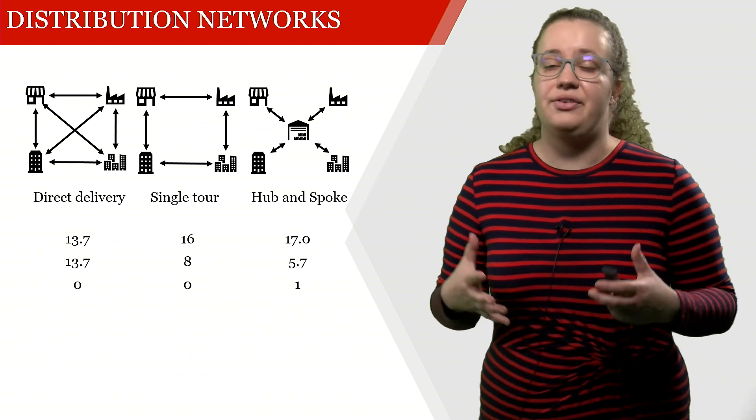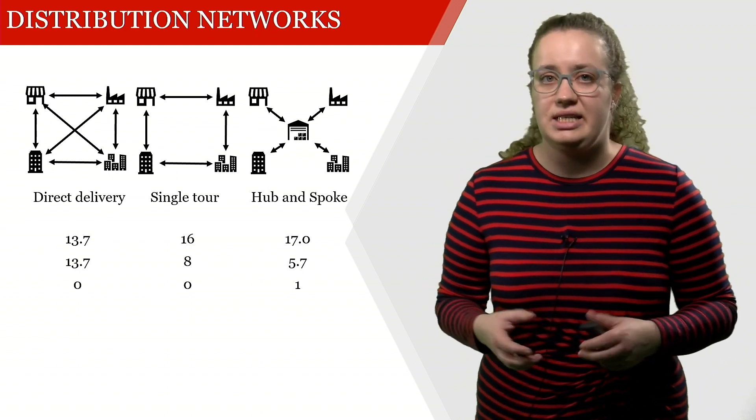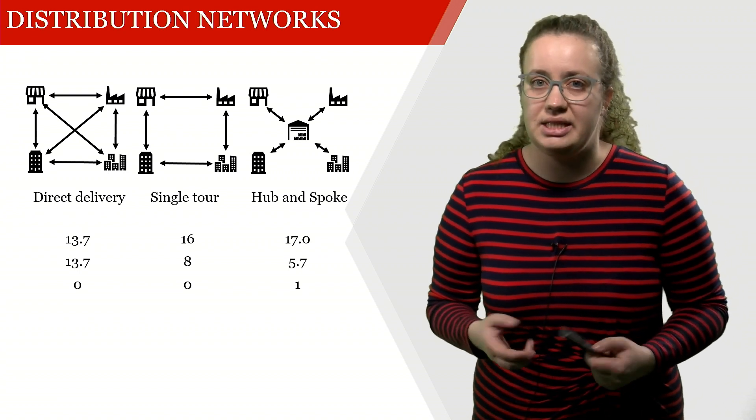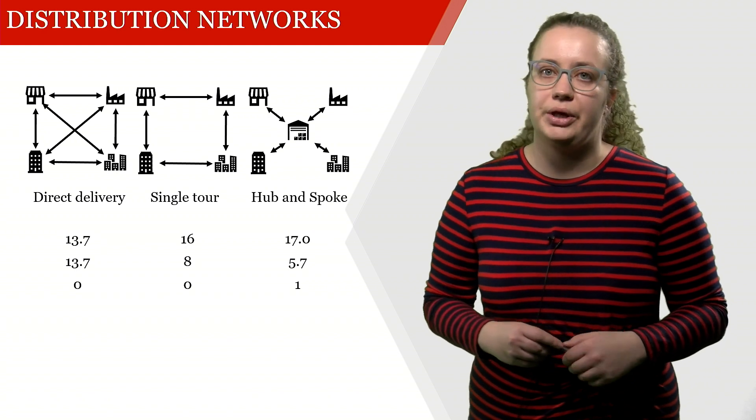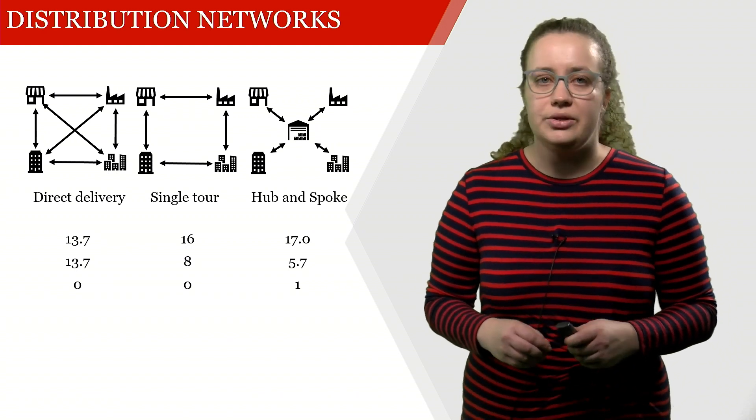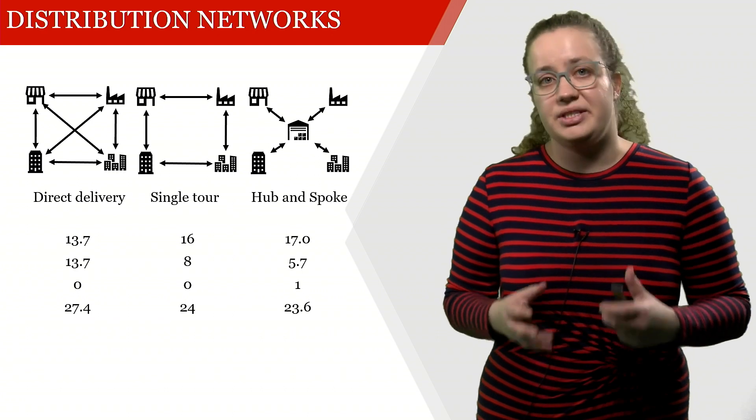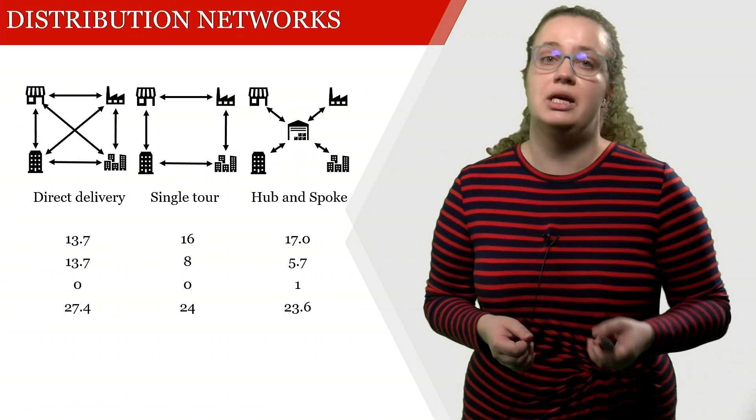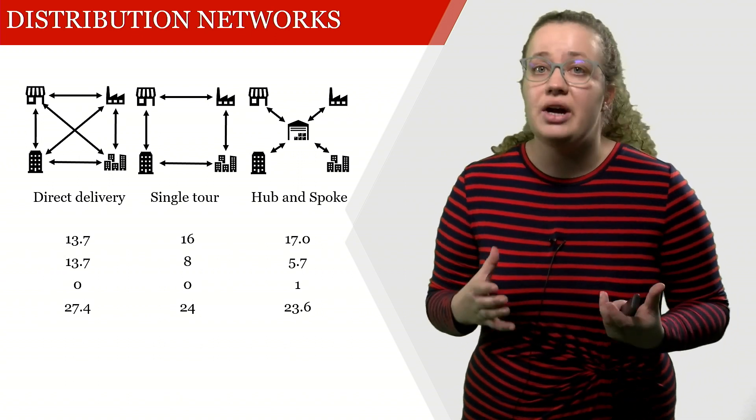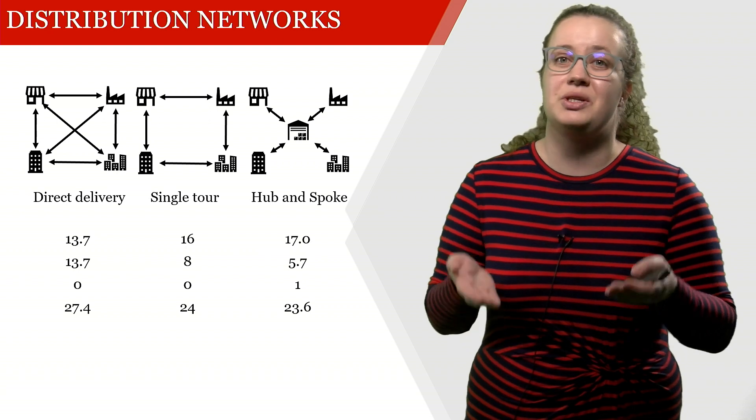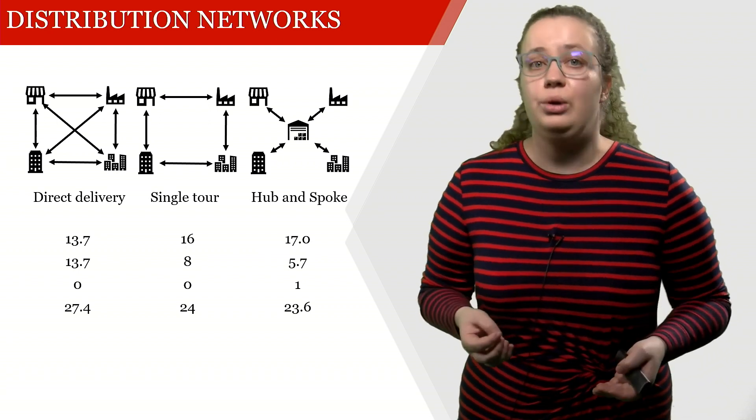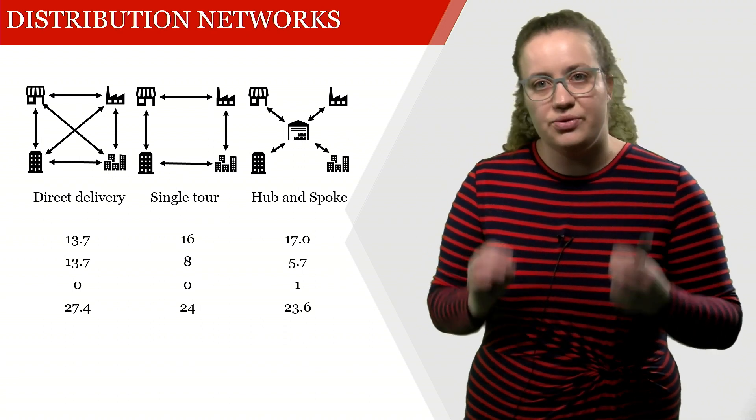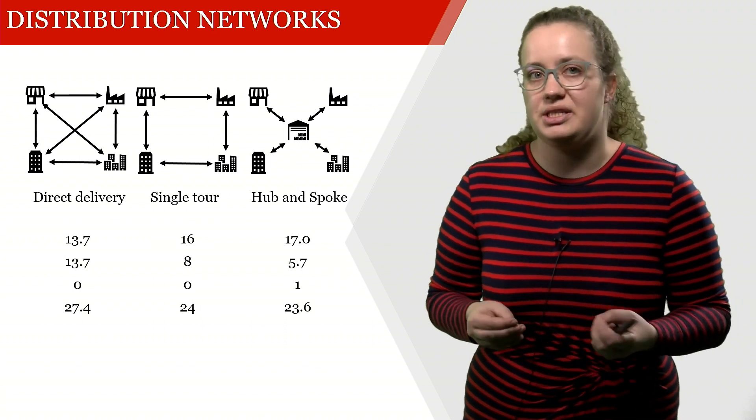And lastly, we have fixed costs for opening facilities. This is clearly zero in the first two cases because we don't open any additional facilities, but it's one in the hub and spoke network where we open the warehouse. Now let's sum up the total costs. We see that with this particular cost structure, the hub and spoke network is the cheapest. But you also see as soon as the warehouse costs increase by just one item, all of a sudden we would be better with a single tour. So it really depends on the exact cost structure which one is the cheapest.